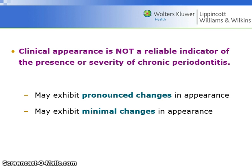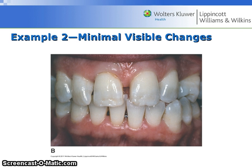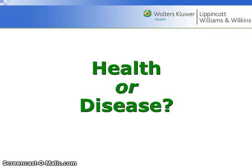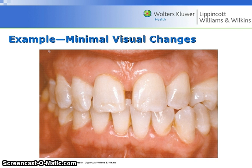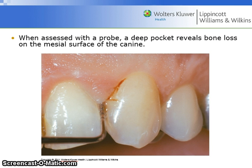Clinical appearance is not a reliable indicator of the presence or severity of chronic periodontitis. The periodontal tissues may exhibit pronounced changes in appearance or they may exhibit minimal changes in appearance. The gingival tissue may be pale pink and have an almost normal looking appearance. When assessed with a probe, a deep pocket may reveal bone loss on the mesial surface of the canine.